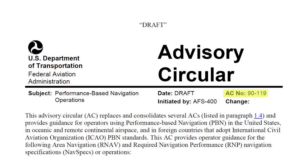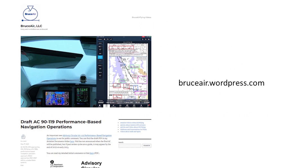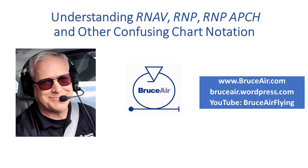I'll end this discussion on a hopeful note. The FAA is preparing to publish a new advisory circular, 90-119, that consolidates and updates guidance on PBN, RNAV, RNP, and other matters in one document. I posted a detailed review and comments on that AC at my blog in May 2021. The agency is reviewing comments on the draft, and we should see the final version by early 2023. Thanks for watching. You can find more information about IFR flying and other topics at my blog and YouTube channel.